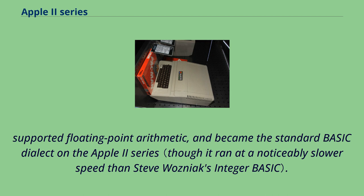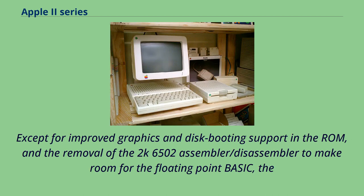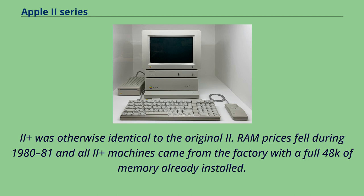Except for improved graphics and disk booting support in the ROM, and the removal of the 6502 assembler/disassembler to make room for the floating-point BASIC, the II Plus was otherwise identical to the original II. RAM prices fell during 1980–81 and all II Plus machines came from the factory with a full 48K of memory already installed.